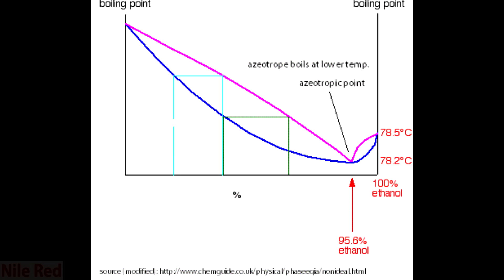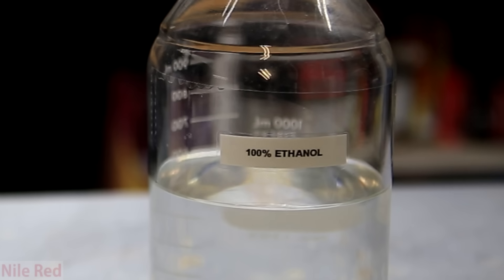So at a concentration of 95%, there's really nothing you can do by distillation that can concentrate the ethanol further. Luckily there are two other major methods that can be used to get to 100%.